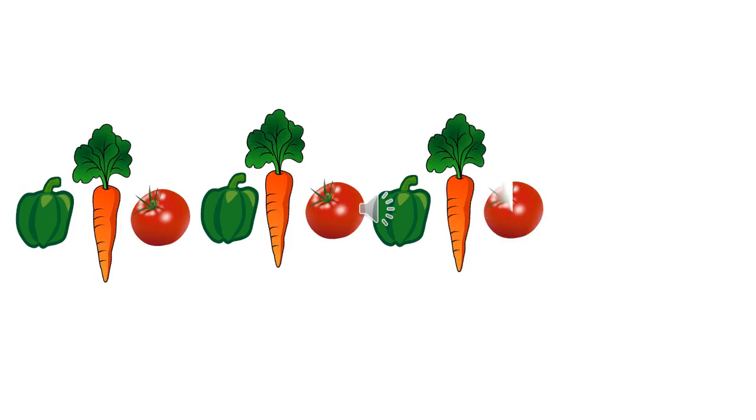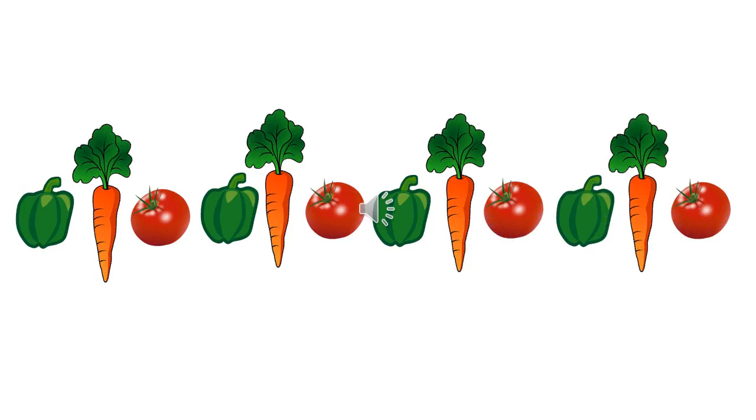Let's have a look at the next slide. Here we have vegetables. First I can see capsicum, carrot and tomato. We are going to arrange these three vegetables in the same order. So again first will come capsicum, then carrot and then tomato. Now you answer — what will come first? Capsicum, then carrot and then tomato, and again capsicum, carrot and tomato. This was a pattern of vegetables.